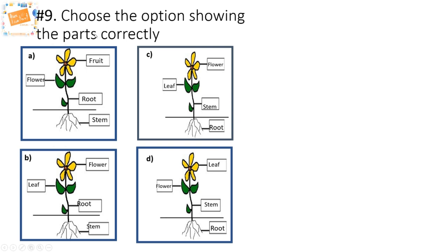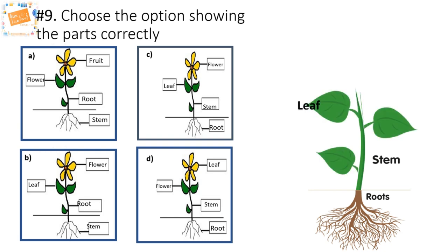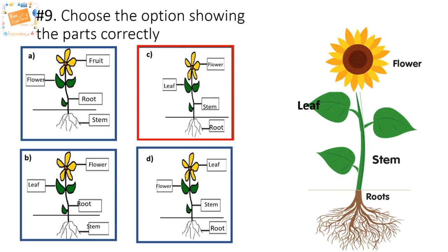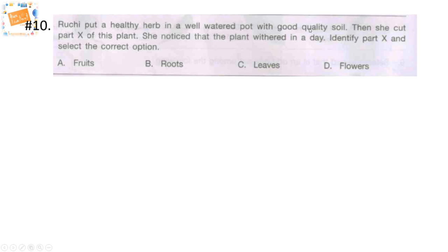Question 9: choose the option showing the parts of a plant correctly. You have four picture options — choose the correct answer. The parts of a plant are: roots (the underground part), the stem (which supports the plant), the leaf (which makes food for the plant), and the flower (which helps to produce the seeds). The answer is option C, which correctly marks root first, then stem, then leaf, and then flower.